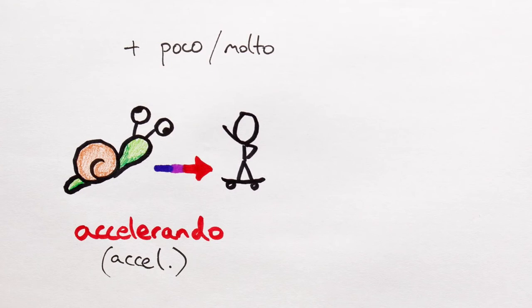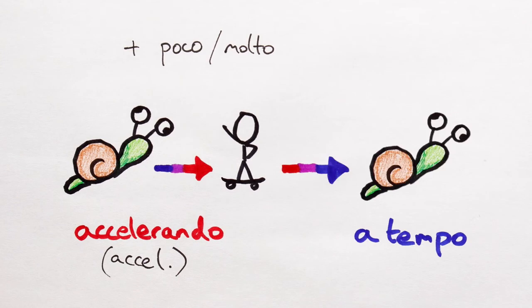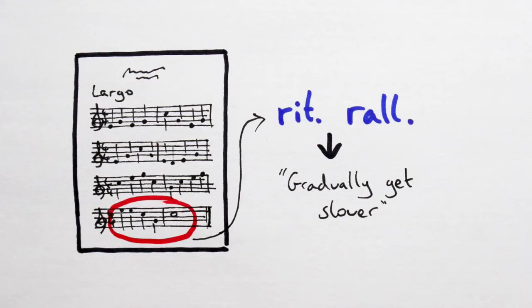And, let's see, one more for today. A tempo, meaning back to the original speed. A tempo basically cancels out things like rals and accels.